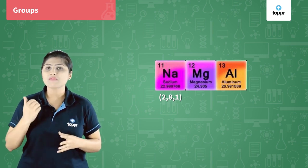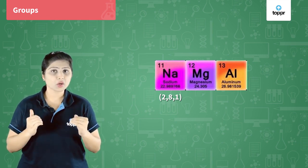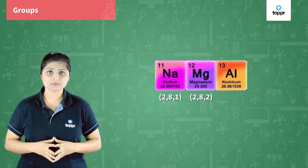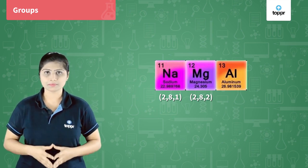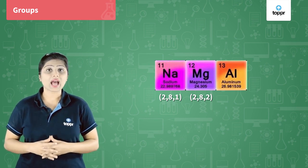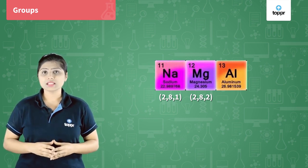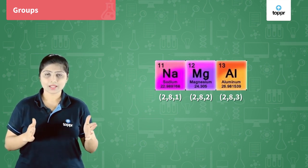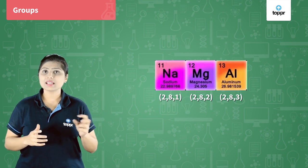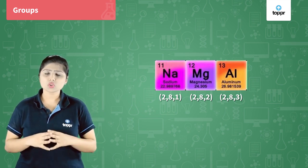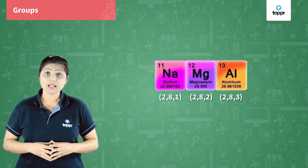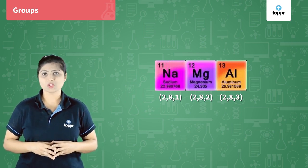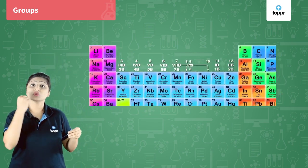In group 2, we have magnesium because its electronic configuration is 2, 8, 2 — it has two electrons in the last orbit, so it is placed in group 2. Then we have aluminum. Its atomic number is 13, so its electronic configuration is 2, 8, 3. Its last orbit has three electrons, so it has three valence electrons and should be placed in group 13. But in group 3, we have transition elements, so that is the reason aluminum is placed in group 13.